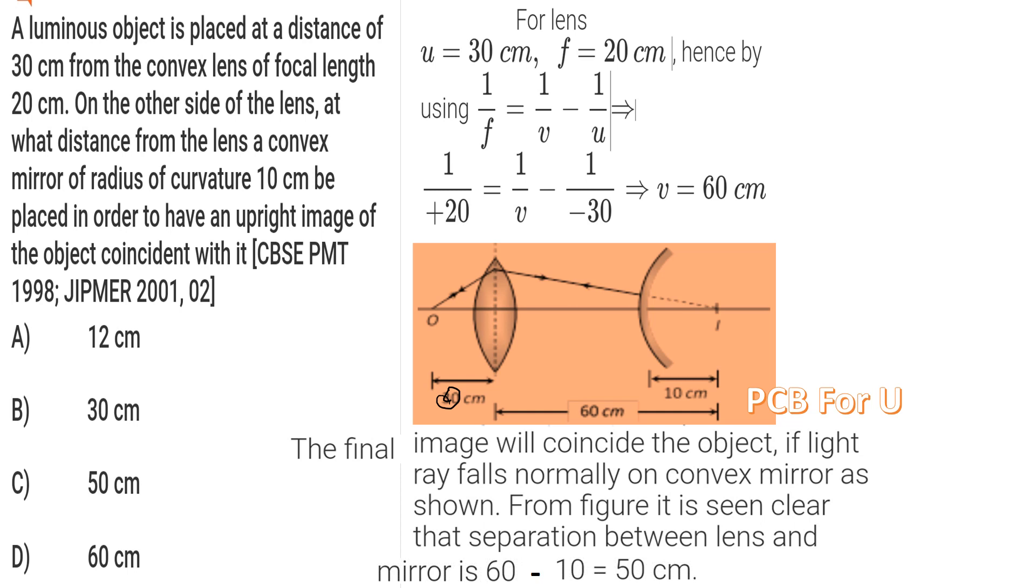Focal length is 20 centimeters. And on the other side of the lens, on the other side of the lens, there is an upright image of the object.